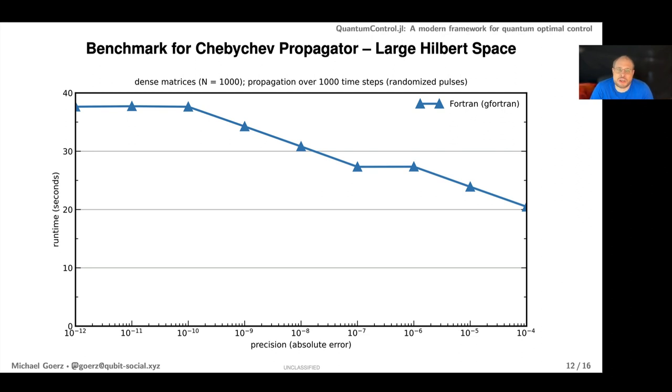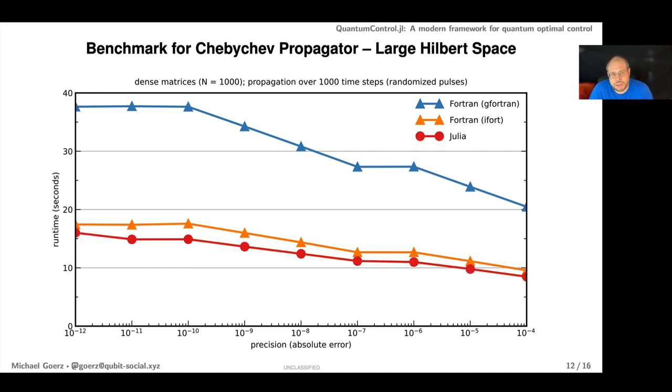The baseline is the Fortran code that we've been using previously. With Fortran it actually matters quite a lot which compiler you're using. If you're using a commercial compiler like ifort with MKL you might actually get a full factor of two in runtime. What about Julia? We see that it actually matches the performance of Fortran code with ifort and is actually even a little bit better.